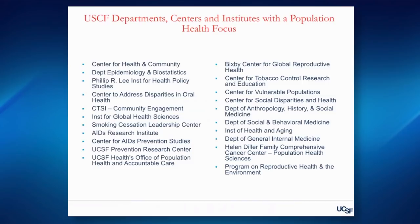The reputation of UCSF in the basic sciences is very strong, as it is in clinical sciences. And despite a lot of work that we do in population health sciences, this work is largely invisible to many people in the public, to our sister institutions, and sometimes to our own students and our own faculty. Our goal is to take this work that we do — a partial list of the departments, centers, and institutes here at UCSF working in population health — and make it visible.